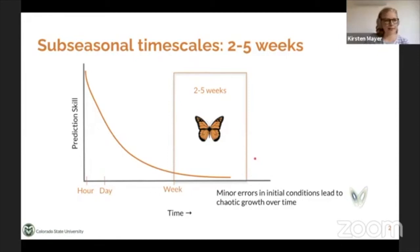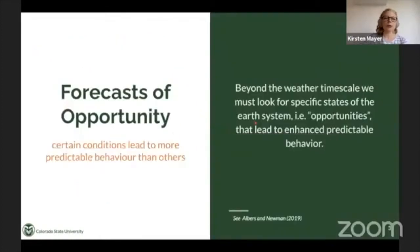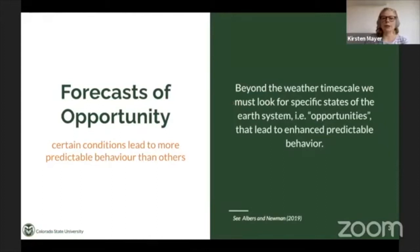You've all experienced the fact that we don't have very good prediction skill on these time scales. For example, if you're planning a picnic, you would probably trust the weather forecast an hour out or a day out as to whether it's going to rain. But on these two to five week time scales — if you're planning a picnic a month out — I doubt many of you would use the actual prediction. So in order to predict on these subseasonal time scales, we look towards forecasts of opportunity, where certain conditions can lead to more predictable behavior than others. Beyond weather time scales, we must look for specific states of the earth system that lead to enhanced predictable behavior.